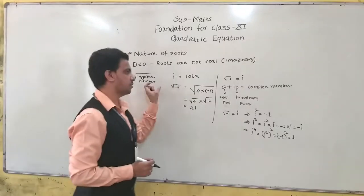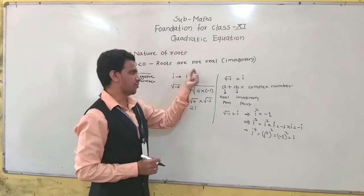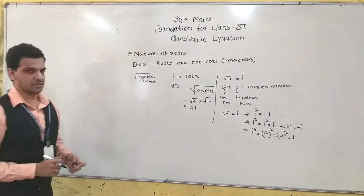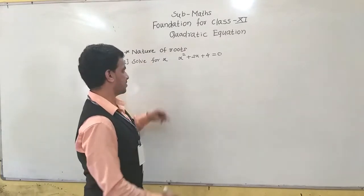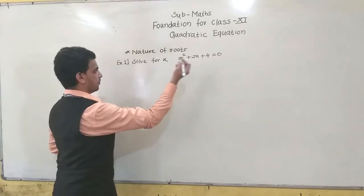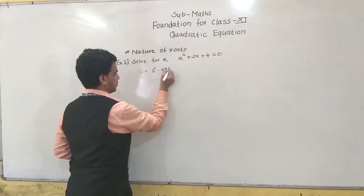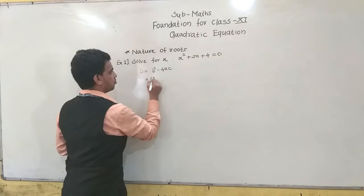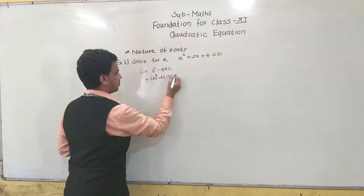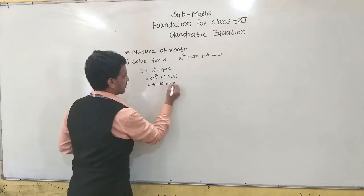Now we will take an example to find roots which are not real — we will get roots as complex numbers. Example: solve for x, x² + 2x + 4 = 0. First we find D: D = b² − 4ac = 2² − 4(1)(4) = 4 − 16 = minus 12.